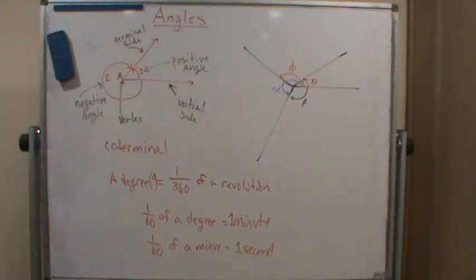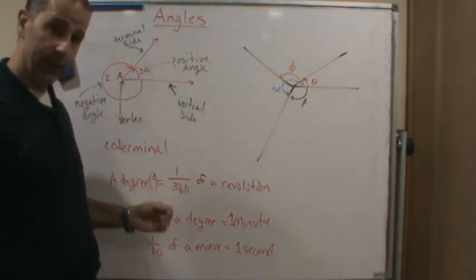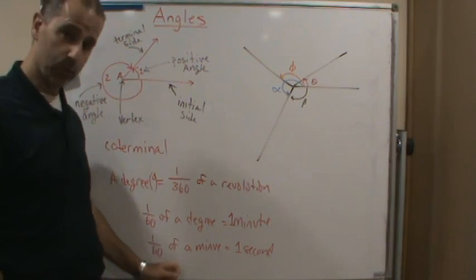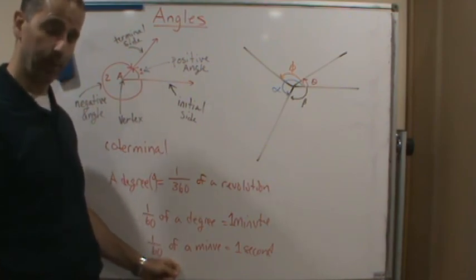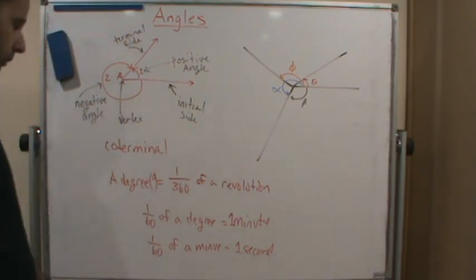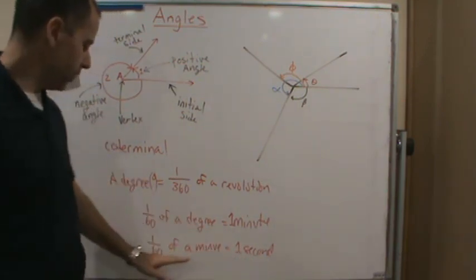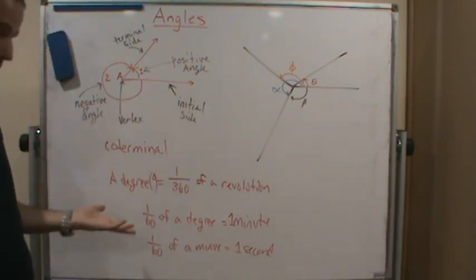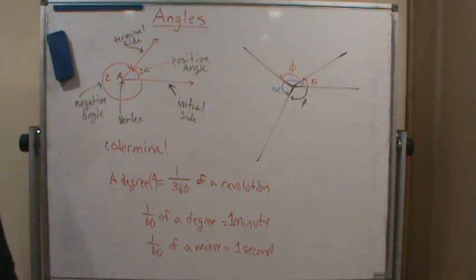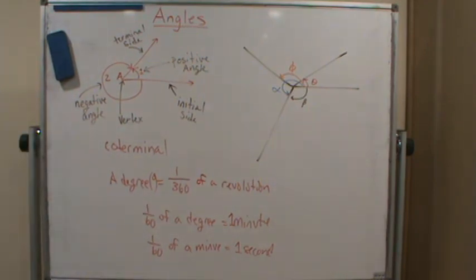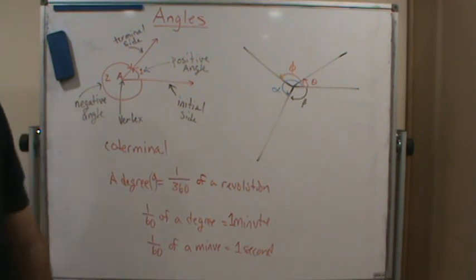These are all measurements of angles. We have degrees, and within a degree we can split it into 60 equal parts each called a minute, then each minute into 60 equal parts each called a second. We have unit ratios we can use to convert between these different measurements of angles using three different units. Let's go ahead and do some examples.